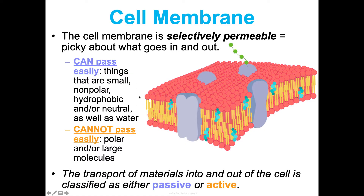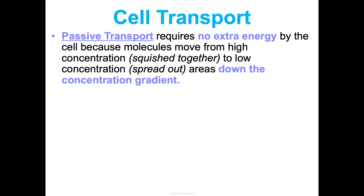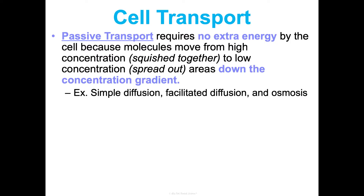Because some things can pass easily and some can't, transport in and out of the cell is either passive or active. Passive transport requires no extra energy by the cell. Things move from high concentration — really squished together — to low concentration, spread out. That means moving down the concentration gradient from high to low. Think about sitting at the top of a playground slide: it's easy to go down to the low part, requiring no energy. Simple diffusion, facilitated diffusion, and osmosis are the three types of passive transport.